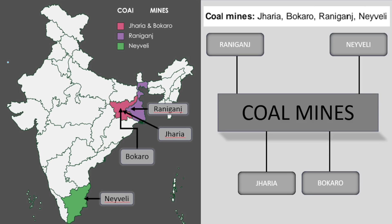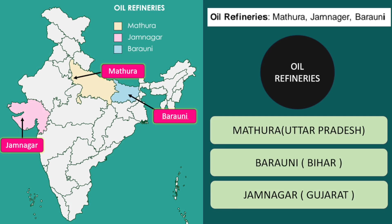Next is coal mines — these are Jharia, Bokaro, Raniganj and Neyveli. Jharia and Bokaro are both in Jharkhand. Raniganj is in West Bengal. And Neyveli, which has brown coal, is in Tamil Nadu — in the north-eastern part of Tamil Nadu. So coal mines are: Raniganj in West Bengal, Jharia and Bokaro in Jharkhand, and Neyveli in Tamil Nadu.